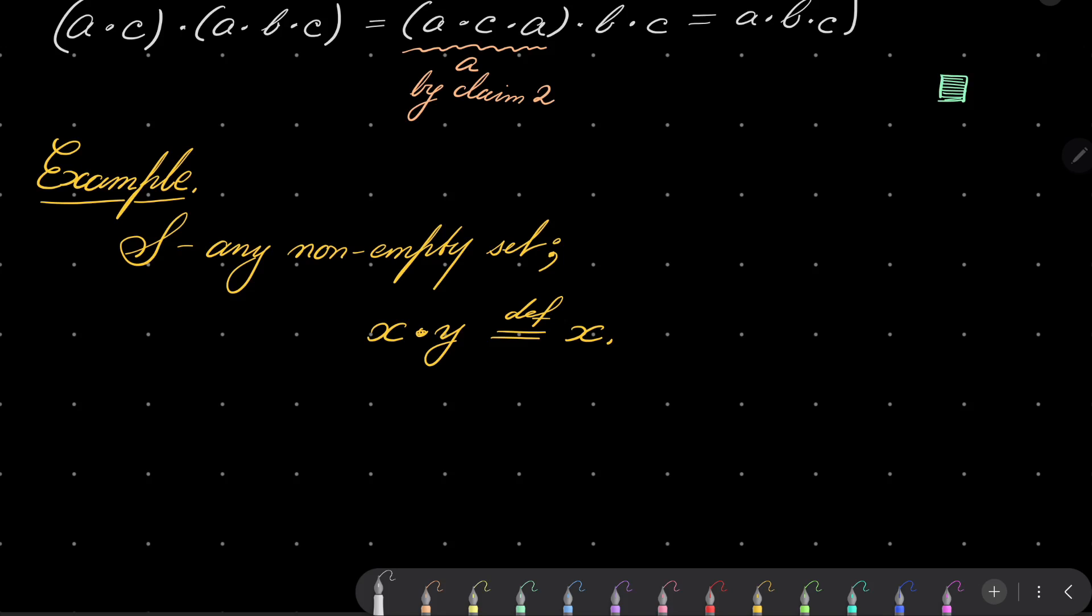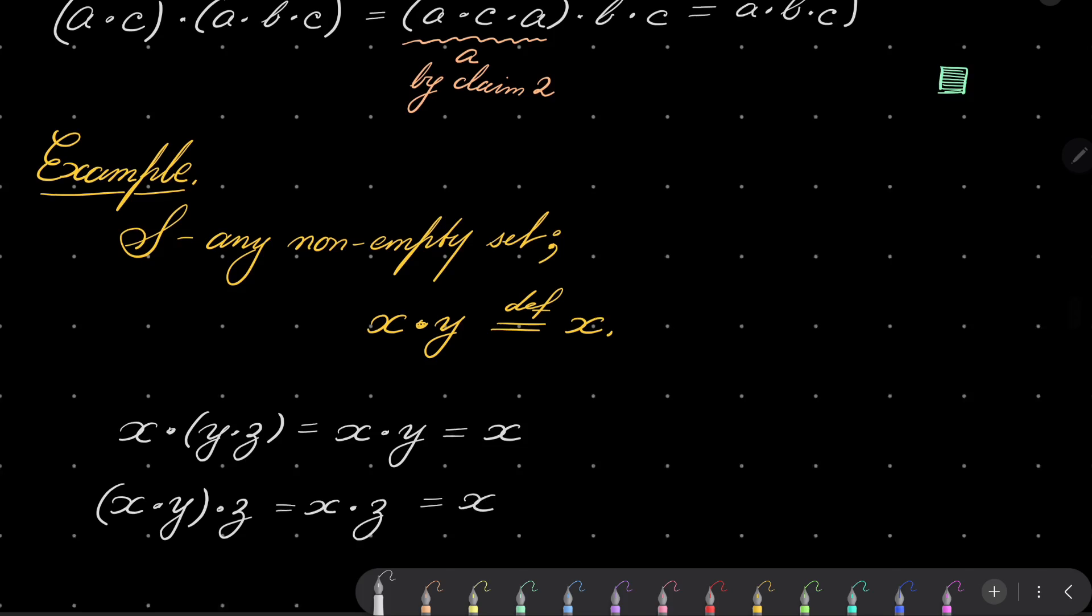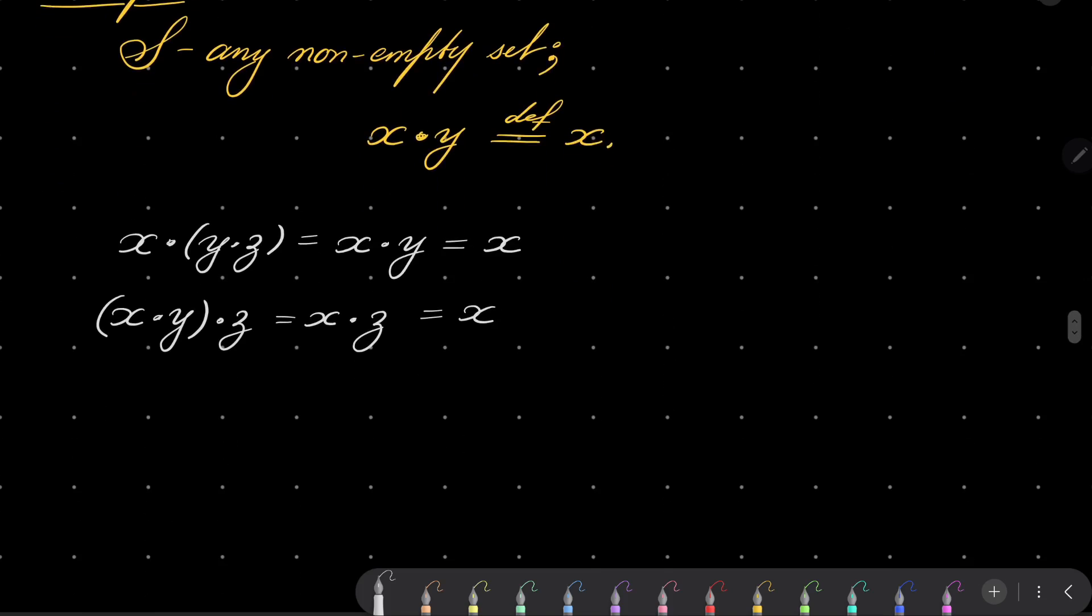Is it associative? Well, first of all, our set is obviously closed under this operation. And now x·y·z: x·y·z is x·y, and x·y is x. And what about the other way? Well, x·y is x, and x·z is x again. It's the same, so our operation is associative. So from this it follows that the operation is associative.